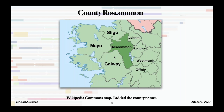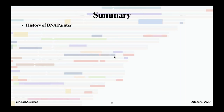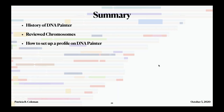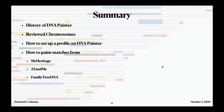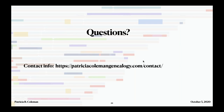In summary, we covered a little history of DNA Painter and how it came about, looked at chromosomes and how you get data from different parts of your family, set up a profile on DNA Painter, and looked at how to paint from MyHeritage, 23andMe, Family Tree DNA, and GEDmatch. Then I shared a bit about how I personally use DNA Painter. Thank you very much — contact information and the blog is at PatriciaColemanGenealogy.com.